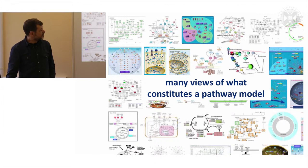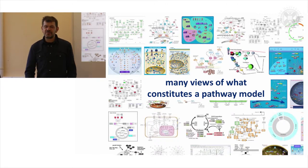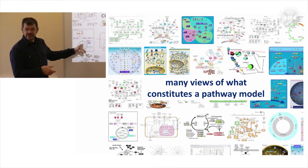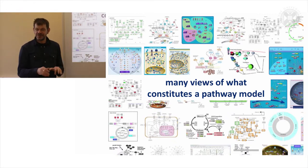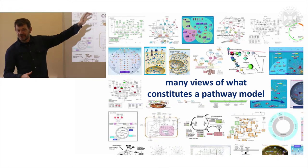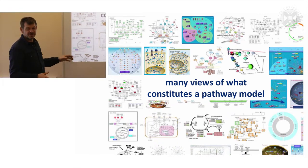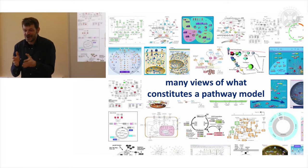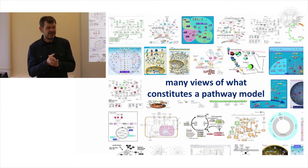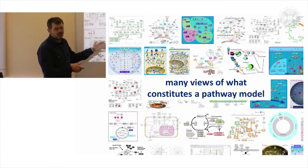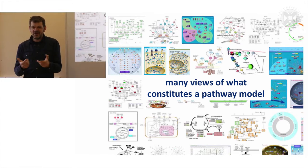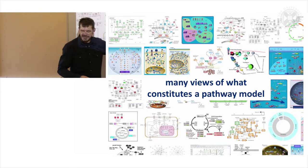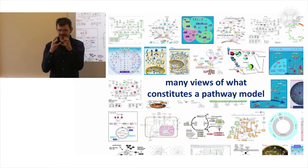There are many views of what might constitute a pathway model. This is what you get if you type in cell cycle into Google and look at the images. You get a smorgasbord of different images. Presumably each one of these pictures took someone a lot of time to actually draw, but actually they're all different. Because they're all different we can't really use them. How do you say what's that representing versus what that is representing? How do you begin to merge these together to get an overall picture of the cell cycle?